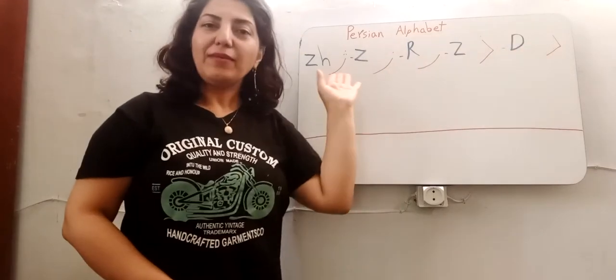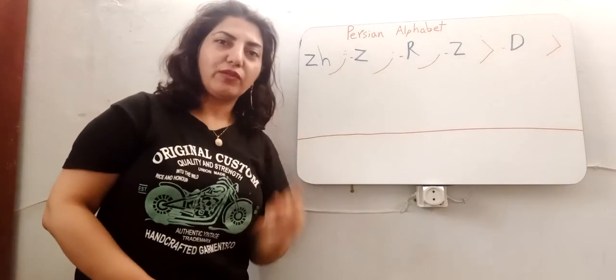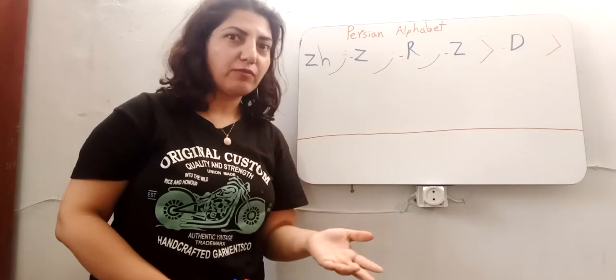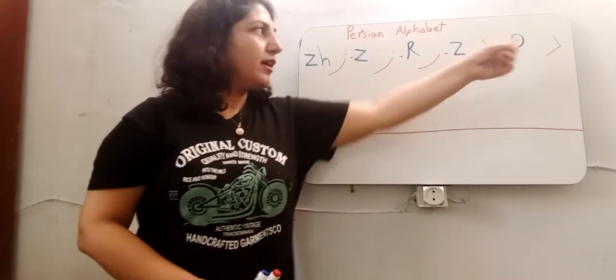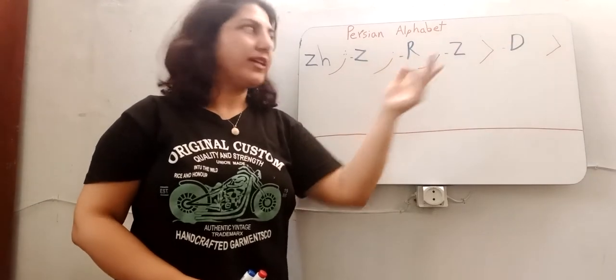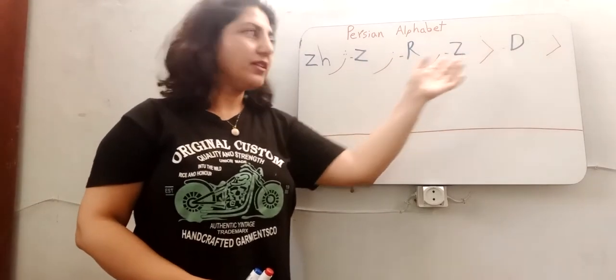These alphabet letters have just one form in writing. They don't have capital or small, or uppercase or lowercase. One form in writing, and they have the same style in writing. D and Z such as each other.